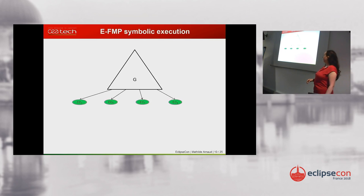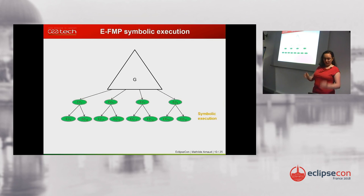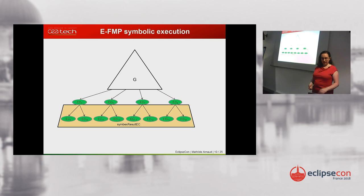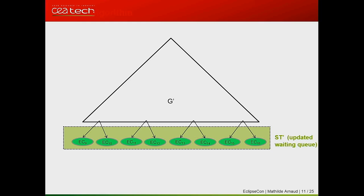This is how the symbolic execution algorithm works. Let's say we've already computed part of the graph and have a set of execution contexts still to be treated — that's our waiting queue. From this set, we compute the possible following steps for the system; that's the symbolic execution step. Each execution context may have zero, one, two, or many possible followers. These new execution contexts are the result of symbolic execution and become the new waiting queue to be treated in the next step.